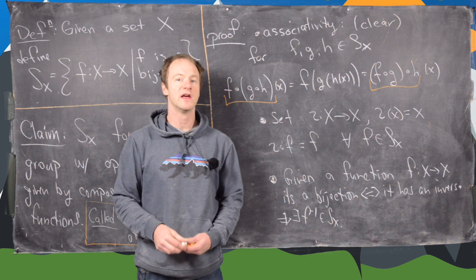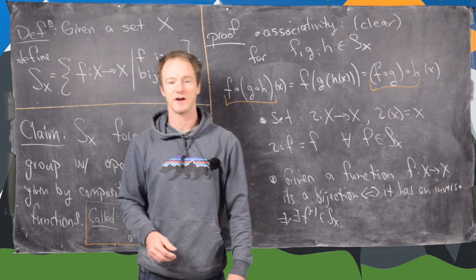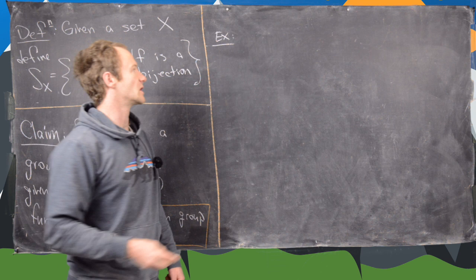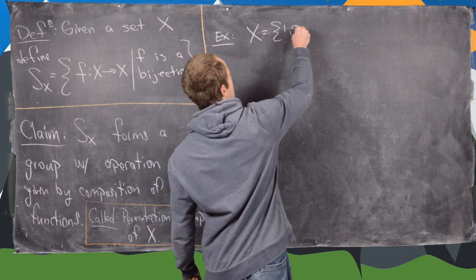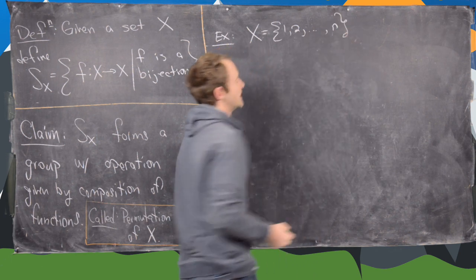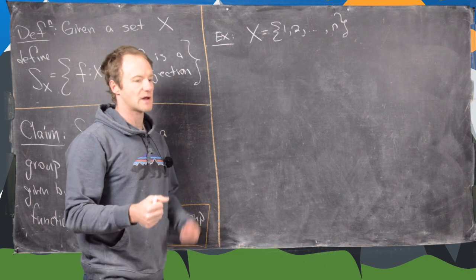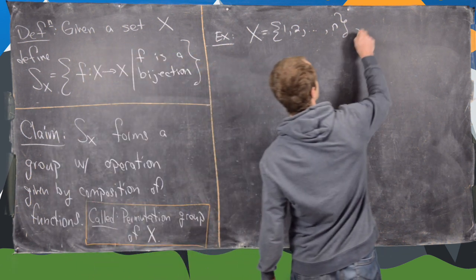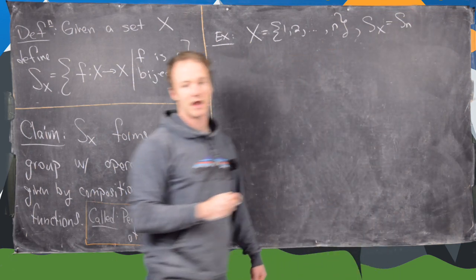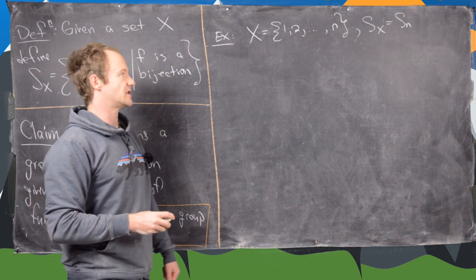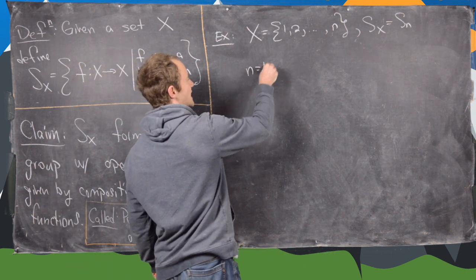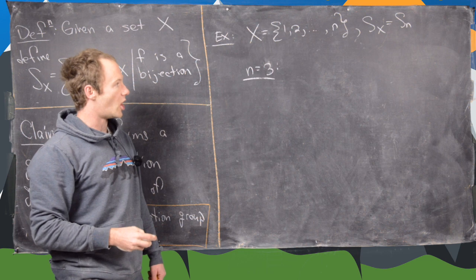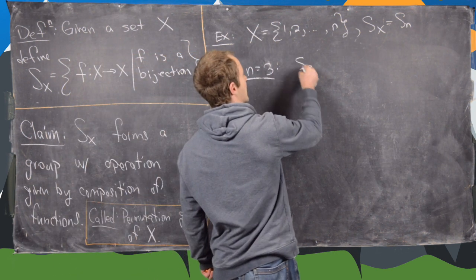By proving this in this very general way, we can actually get several examples of groups. The example we really want to look at is when x equals the set {1, 2, ..., n}. This is called the permutation group on n symbols or on n letters, and we write S_x as S_n. Let's do a specific sub-example where we set n equal to 3 and see if we can write down all of the elements of S_3.